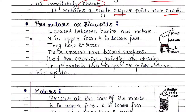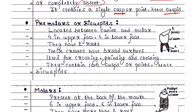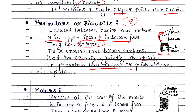Next is premolars or bicuspids. They are located between the canine and molar. Eight premolars are found in humans — four in the upper jaw and four in the lower jaw. They have two roots, as you can see here. Their crowns have a broad surface and they are used for crushing, grinding and chewing. They contain two cusps or points, hence called bicuspids.